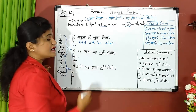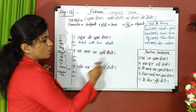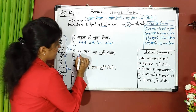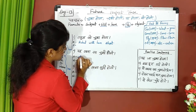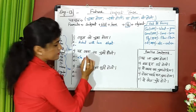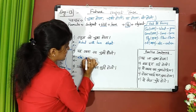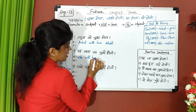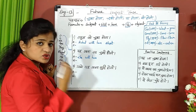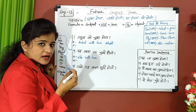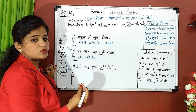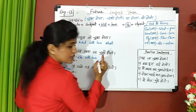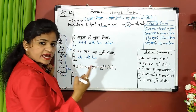Next sentence: referring to female gender — 'she will have eaten food.' Subject: she. Then will + have + eaten (third form of eat). She will have eaten food.